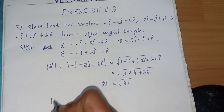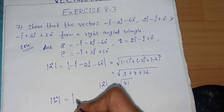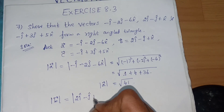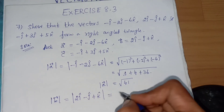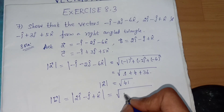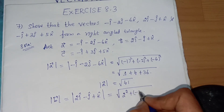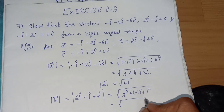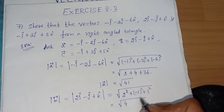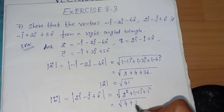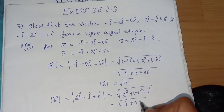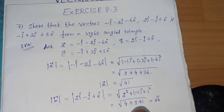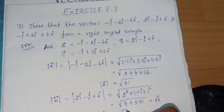Next step, magnitude of b vector: |b| = √(2² + (-1)² + 1²) = √(4 + 1 + 1) = √6. So the magnitude of b vector is √6.